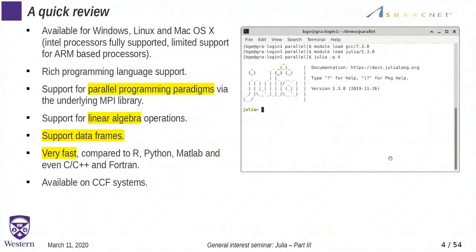Julia has rich programming language support and supports the parallel programming paradigm through underlying MPI libraries. It also supports linear algebra operations with multithreading enabled, and supports data frames which is a big thing for data analytics and big data. It is very fast compared to R, Python, MATLAB, and even the compiled languages such as C, C++, and Fortran.